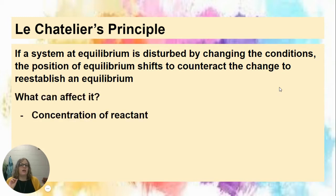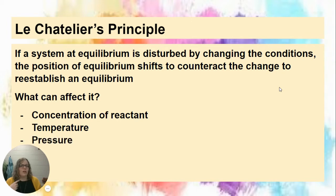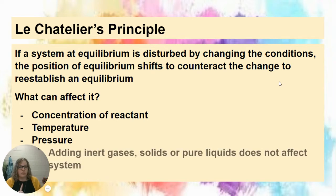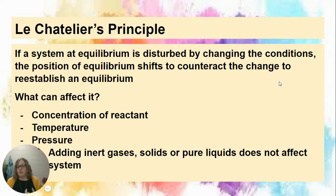Things that can affect equilibrium include the concentration of reactants or products, temperature, and pressure — we'll take a look at all of those scenarios. However, keep in mind: adding an inert gas, a pure solid, or a pure liquid does not affect the equilibrium. An inert gas doesn't react, and pure solids and pure liquids don't appear in our equilibrium expression, so they are completely ignored.